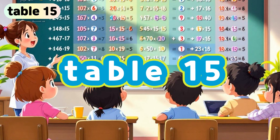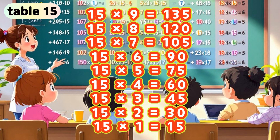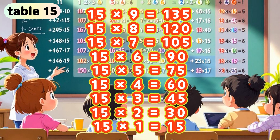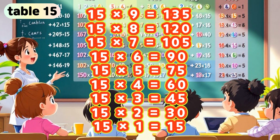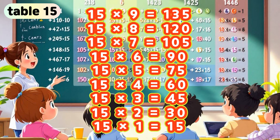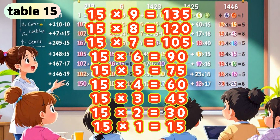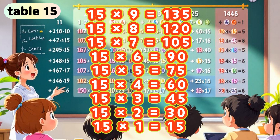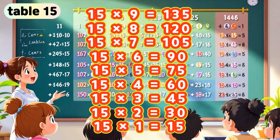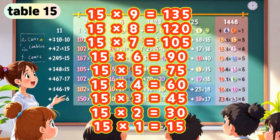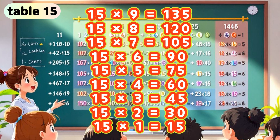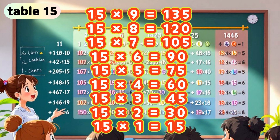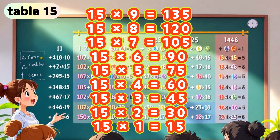Table 15. 15 times 9 is 135. 15 times 8 is 120. 15 times 7 is 105. 15 times 6 is 90. 15 times 5 is 75. 15 times 4 is 60. 15 times 3 is 45. 15 times 2 is 30. 15 times 1 is 15.